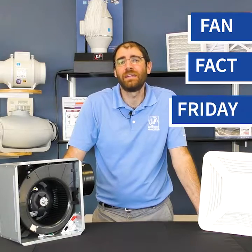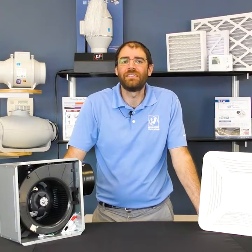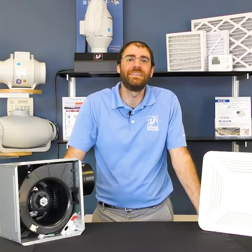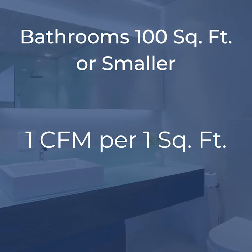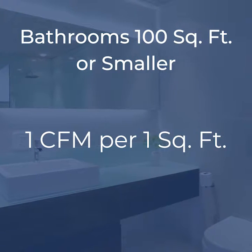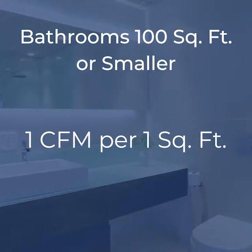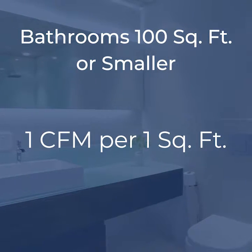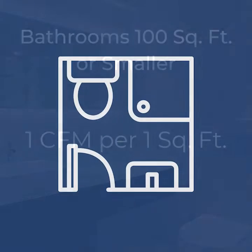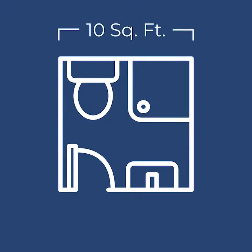Hi, I'm Daniel Grapp, S&P USA's Residential Product Manager. Today is FanFact Friday and we're learning how to calculate the CFM needed in the bathroom. The standard rule of thumb for bathrooms 100 square feet or smaller is 1 CFM per square foot. To find the square footage of your space, multiply the length of the bathroom by the width.